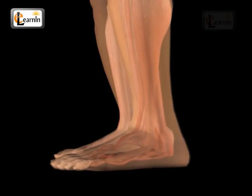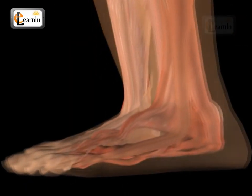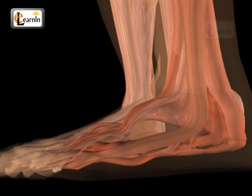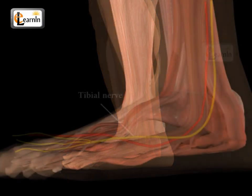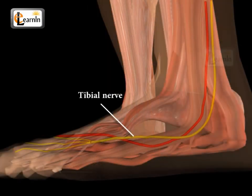Most of the muscles found in the foot are arranged in a layered structure on the sole of the foot. They provide padding underneath the sole. The tibial nerve is the main nerve in the foot, which supplies sensation to the toes and sole of the foot, and also controls their respective muscles.